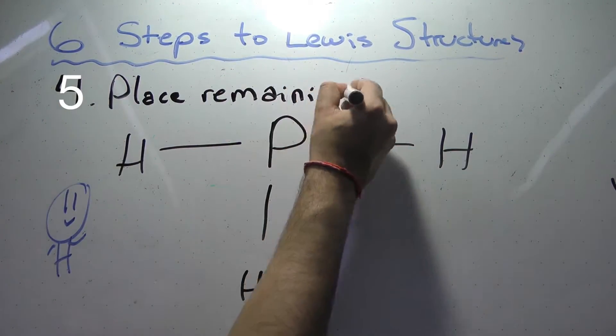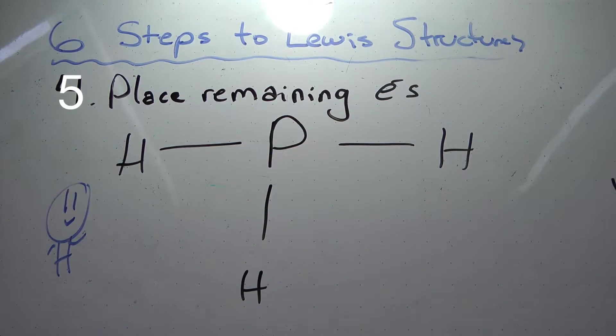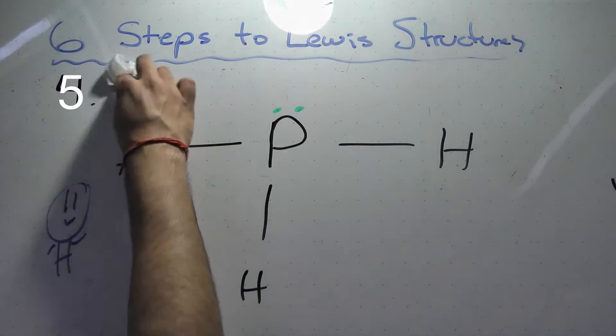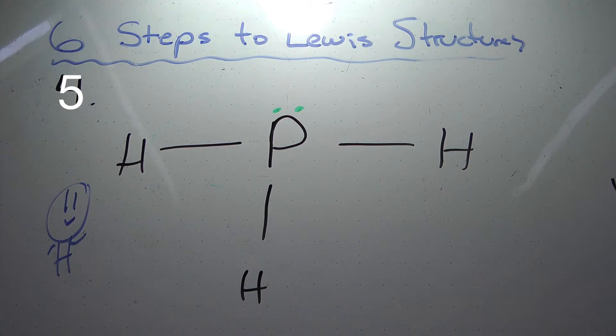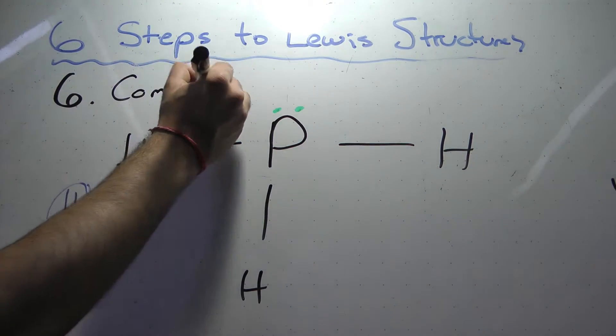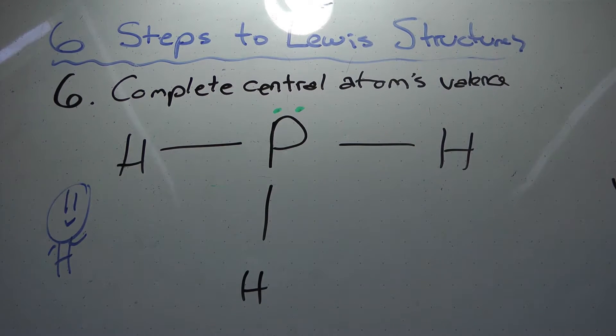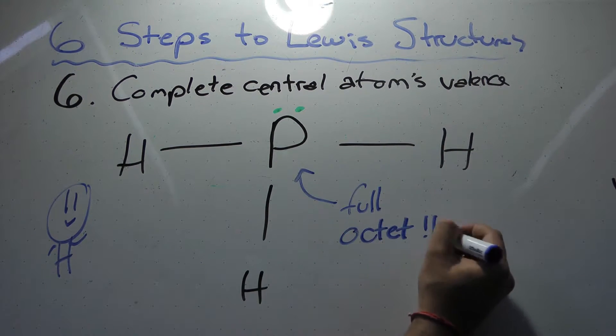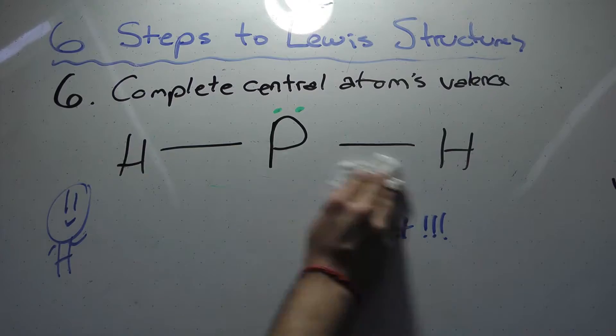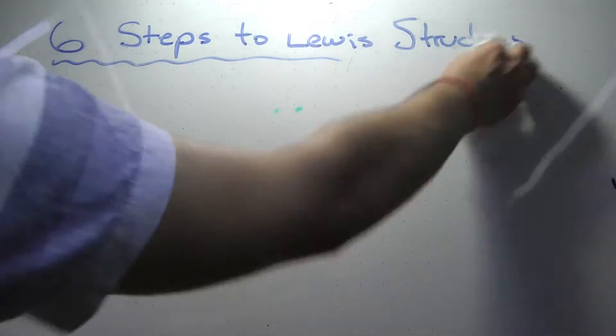Step 5: Place any remaining electrons on the central atom. So far we have used 6 valence electrons out of the 8. The remaining 2 valence electrons goes around phosphorus to ensure it has a complete octet. Most atoms need complete octets, with nitrogen being the exception, as well as row 2 elements. Step 6: If the central atom does not have an octet, form double bonds, and if necessary, form triple bonds. In this case, PH3 has a full octet. Thus, more bonds are not necessary.